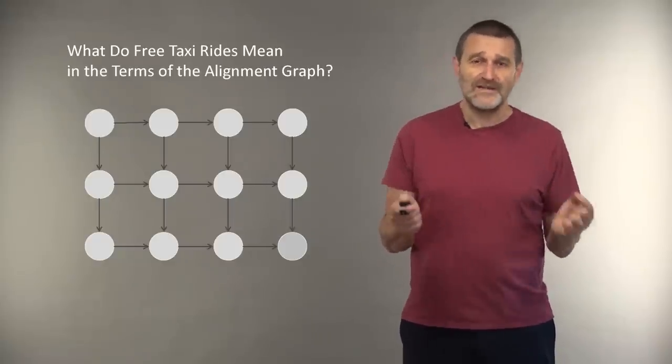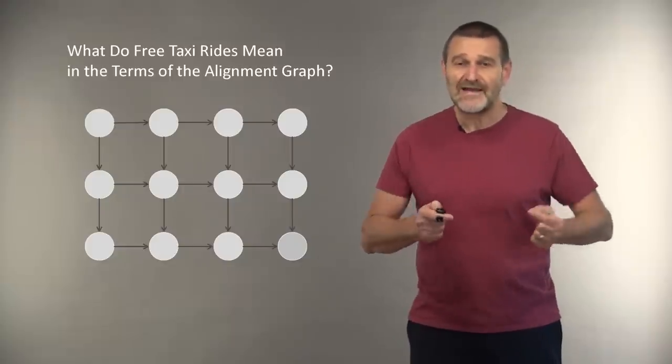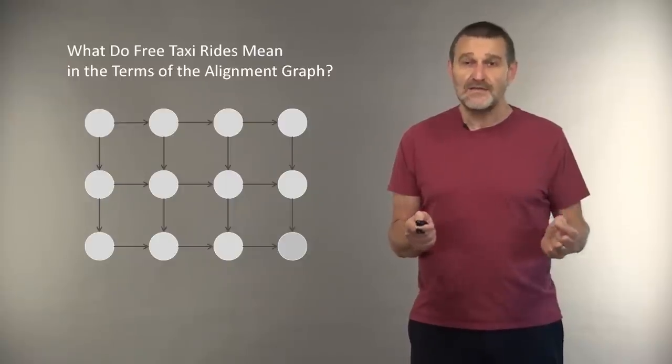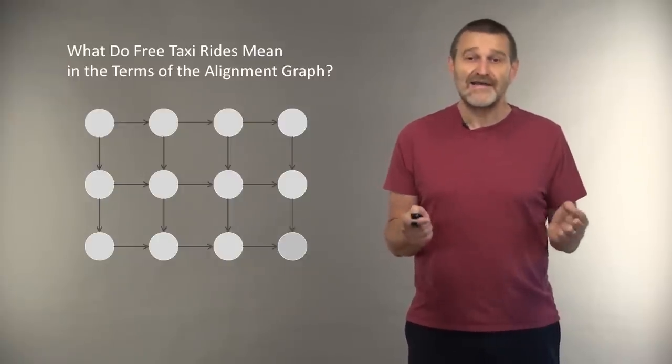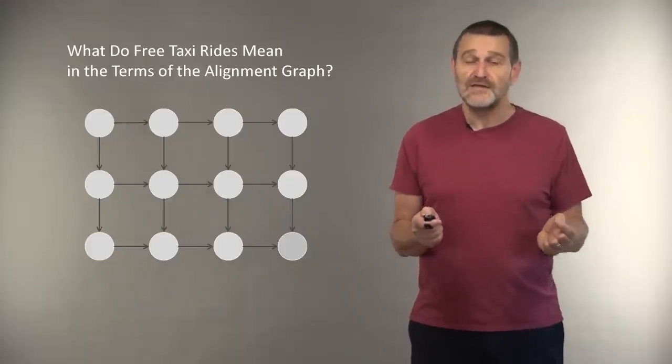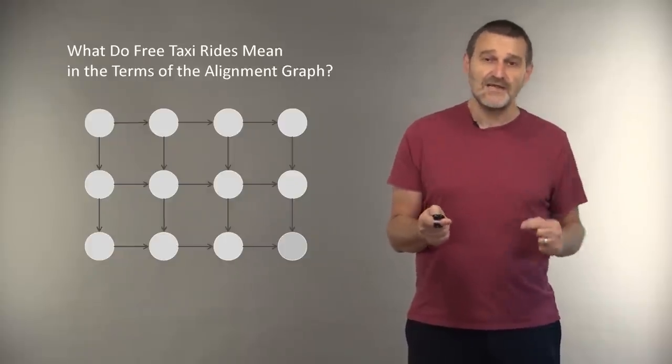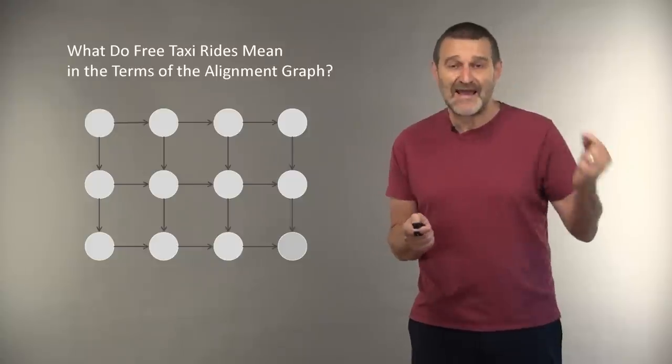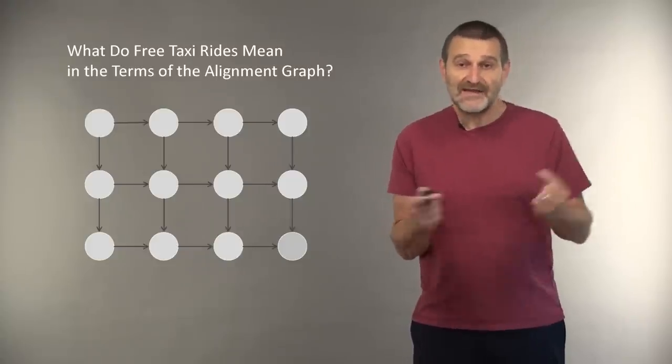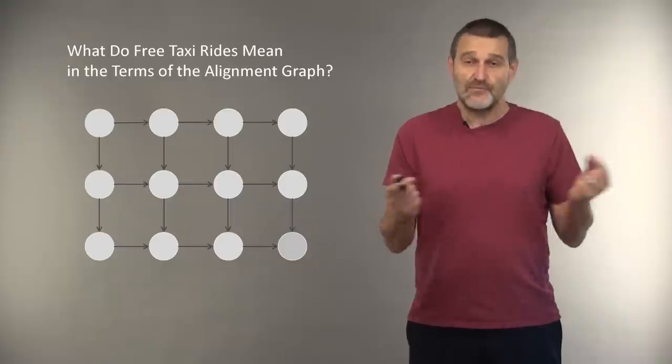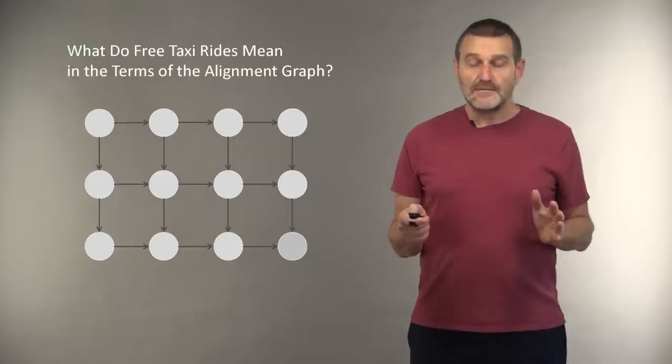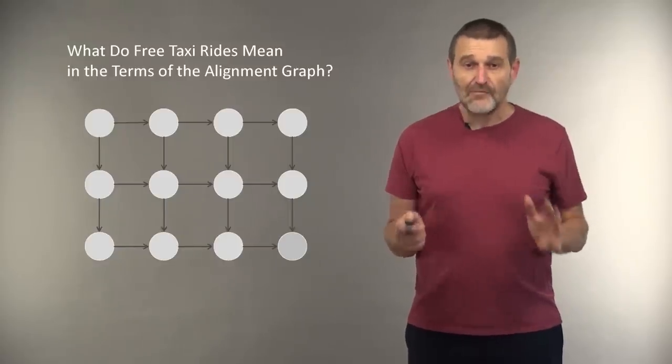You may ask how in the world we can take taxi rides through the alignment graph. Well, the whole point of introducing this concept of Manhattan-like cities and traveling in them, is that we are free to build whatever Manhattan-like grids for solving our biological problems. And in this case, what is a free taxi ride? It's simply adding extra edges of weight zero to our alignment graph. And since we are free to build whatever Manhattan we want, we can, of course, we are at liberty of introducing this taxi ride.